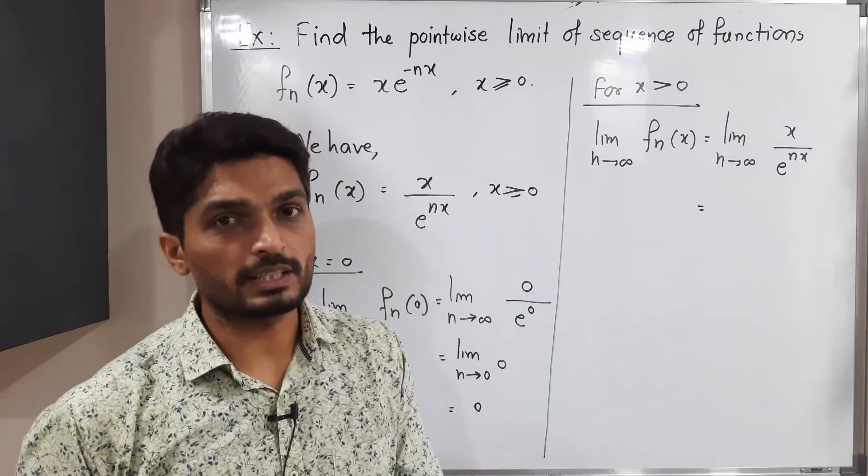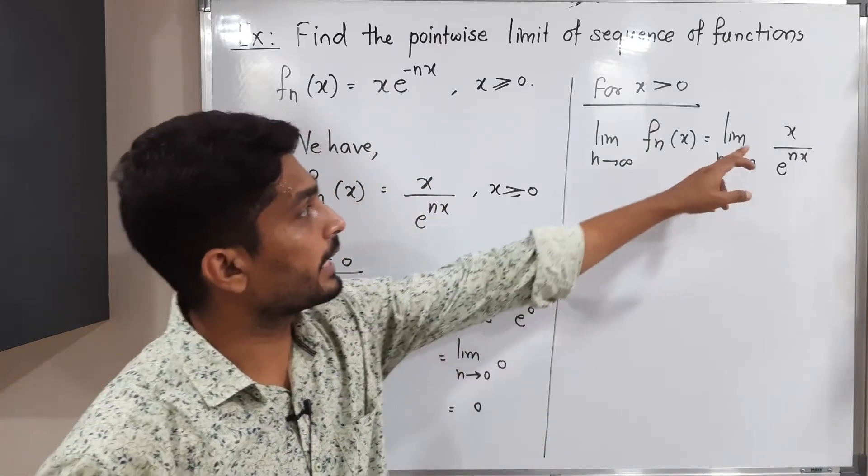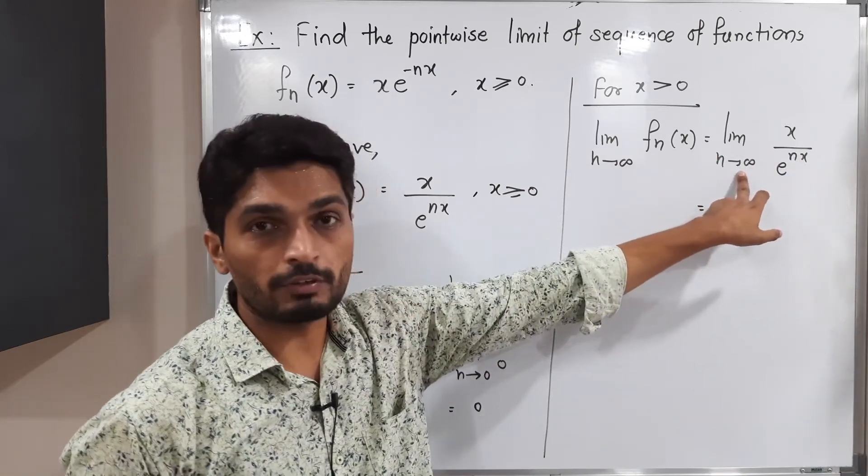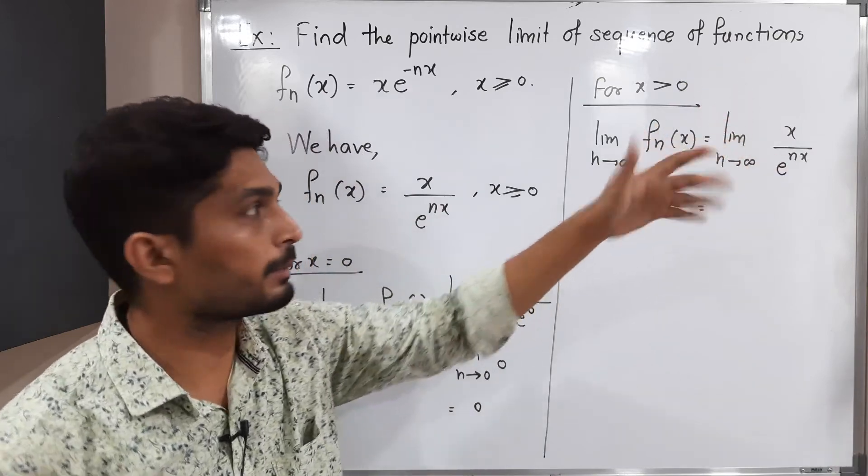Since it is x, there is no n. If you apply the limit, the denominator will go to infinity. Since we are taking n → ∞, e^∞ will be infinity. 1/∞ = 0.